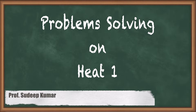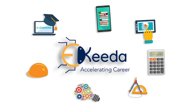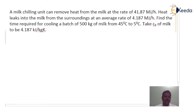Hello friends, in this video I am going to solve a problem on heat. In this problem, a milk chilling unit can remove heat from the milk at the rate of 41.87 mega joules per hour. Heat leaks into the milk from the surroundings at an average rate of 4.187 mega joules per hour. Find the time required for cooling a batch of 500 kg of milk from 35 degree Celsius to 5 degree Celsius. Take CP of milk to be 4.187 kilo joules per kg Kelvin.